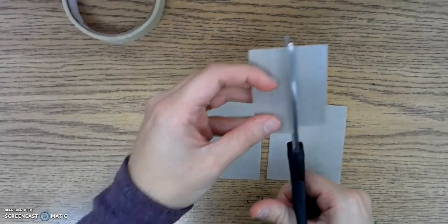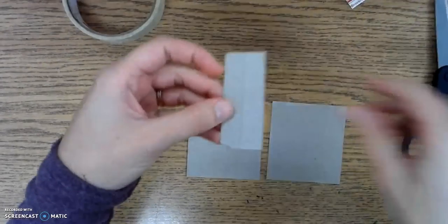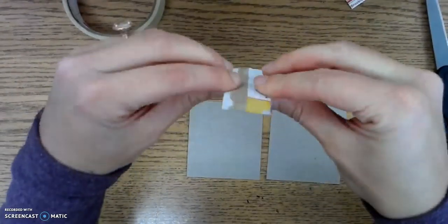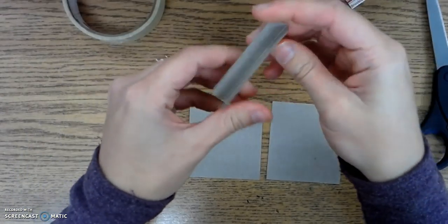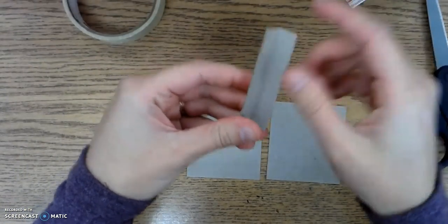And I'm going to trim it down to the size that I need. And then I'm going to trim it to where I have this part like this. So, just like my tape was on there the first time, this time it's going to be my cardboard.